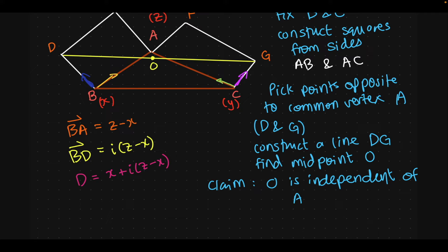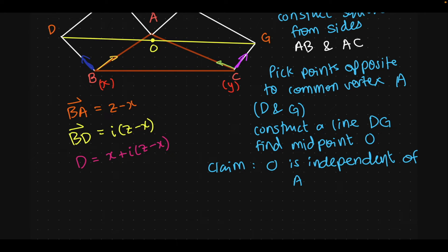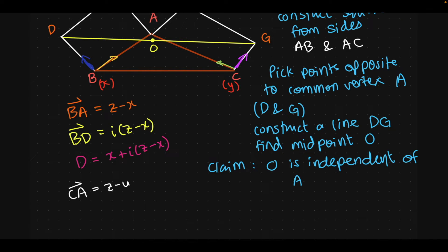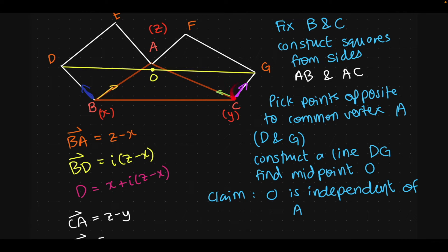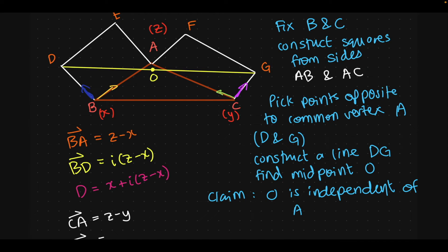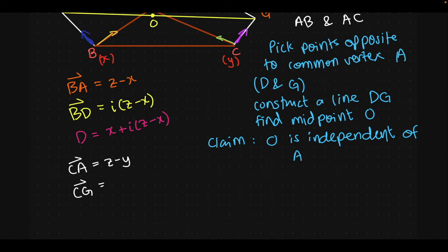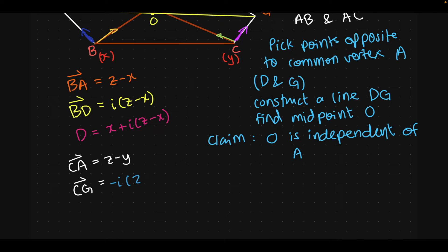So, we have coordinates of D, which are going to be just X plus I times Z minus X. Now, we repeat this entire algorithm on this right square here. And then, once we find G, we will just take the midpoint as discussed. So, when we do that, we will have CA is going to be Z minus Y. Again, head minus tail. You can check that. CG is going to be again, now, again, it is orthogonal. So, we'll have a factor of I, except the rotation now is actually clockwise, giving us a negative rotation. So, we'll have a minus I multiplied to the vector CA.